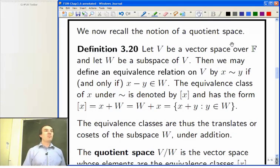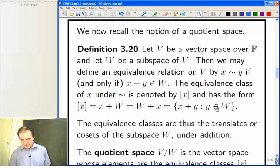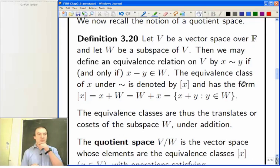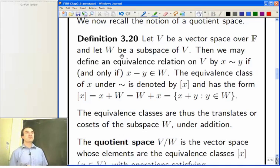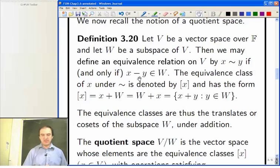So quotient spaces are one step more sophisticated than direct sums, I would say. So let's have a look at this. It connects up with equivalence relations. So you've got a vector space and you've got a subspace and we're going to want to form the quotient space. Now, this is connected to, with equivalence relations in the following way. You can define an equivalence relation by saying that x is related to y if and only if x minus y is in w.